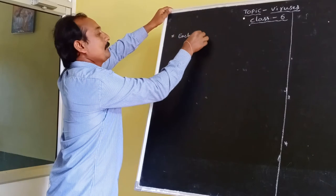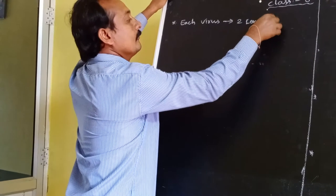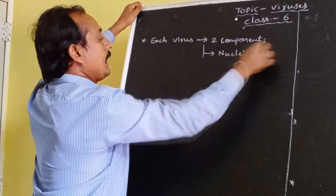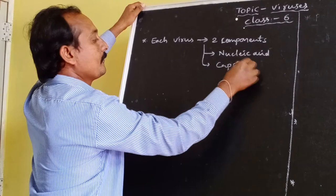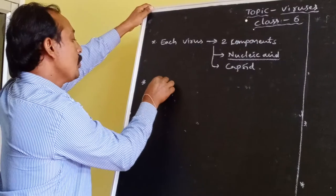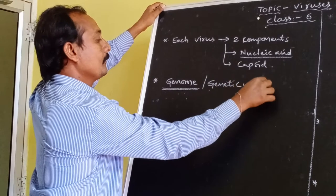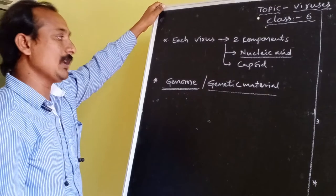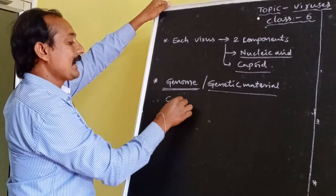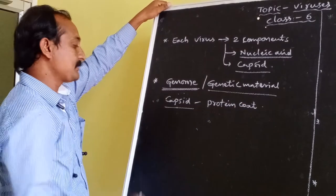Each virus particle consists of two main components: nucleic acid and a capsid. The nucleic acid is the genetic material, also called the genome. This genome or nucleic acid is surrounded by a protein coat. The protein coat of the virus is called the capsid.